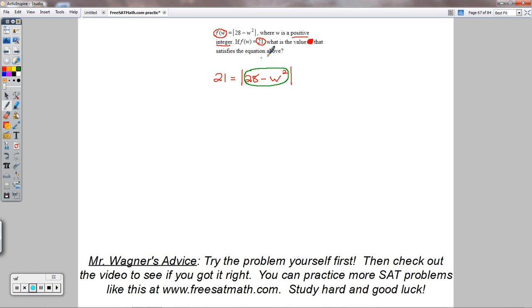So this part, whatever's inside the absolute value, this could be either positive 21 or negative 21 altogether after I'm subtracting w squared.